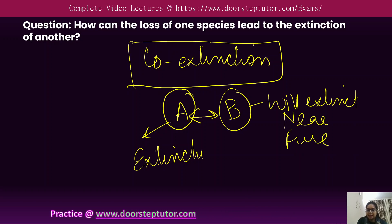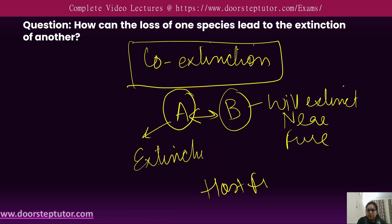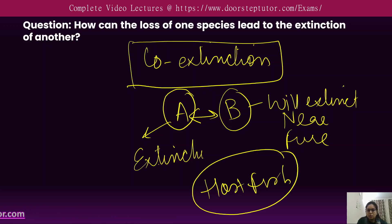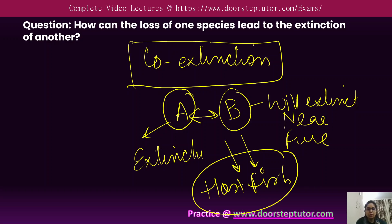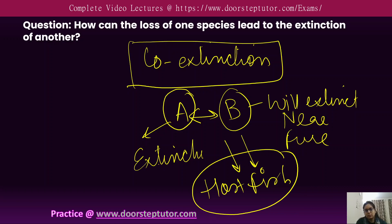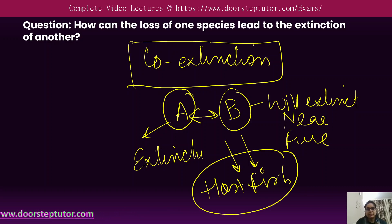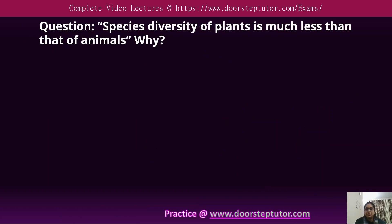For example, when a host fish becomes extinct from a particular habitat, the parasites located on that host will also become extinct. In this way, both species get extinct through co-extinction.